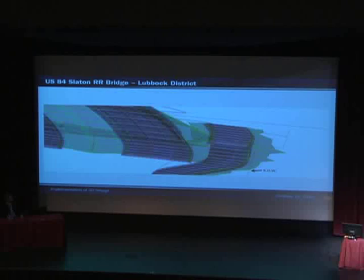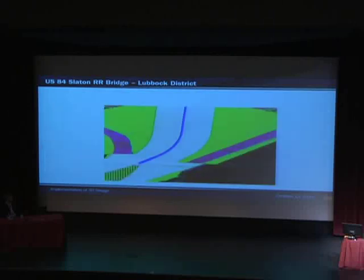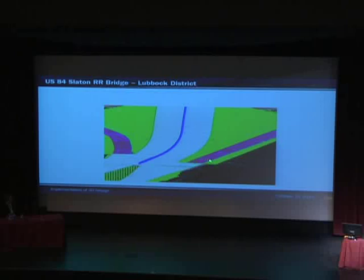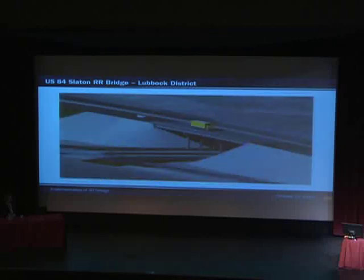We didn't want to use any retaining walls in this project because it was going to add more cost. So we decided to bring the two road beds together and make it an undivided highway with barrier going down the middle. As you can see, the slopes fit a lot better, our footprint is smaller, and we actually saved money on embankment. There's the Lubbock project once it's all rendered.